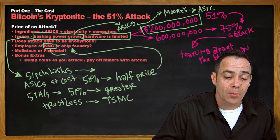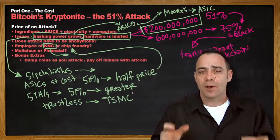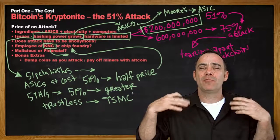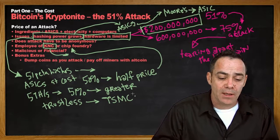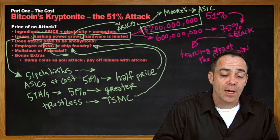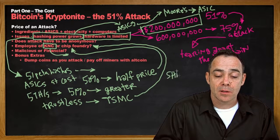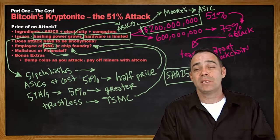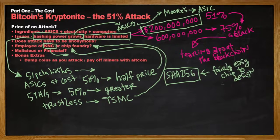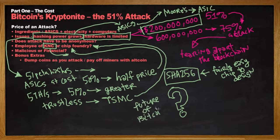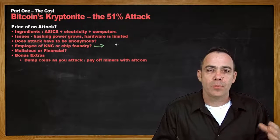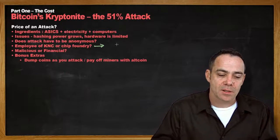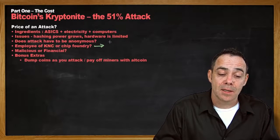As we talk about trust and trustless networks, we have to consider how much we are trusting the folks at TSMC who can manufacture as many chips as they want, and the folks at KNC. We have already had issues with mining companies like Butterfly Labs possibly mining before sending out their product. We really have to question who is at the chip foundries and what access they have to a SHA-256 chip — and this is a fairly easy chip to design, no private design required. Someone working at a chip fabrication plant could drop the price of a 51% attack to well under $20 million.